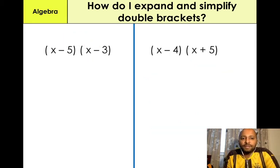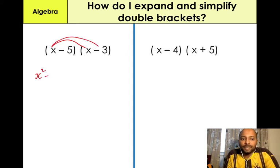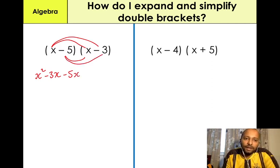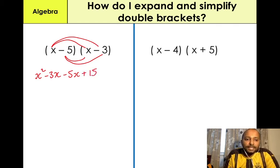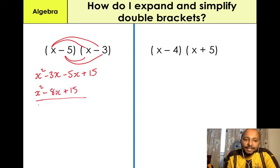We have (x − 5)(x − 3). First: X times X — X squared. Outer: X times minus 3, so minus 3X. Inner: minus 5 times X, which is minus 5X. Last: minus 5 times minus 3 gives us positive 15. Simplify by collecting like-for-like terms: X squared minus 8X plus 15. And that is our final answer.